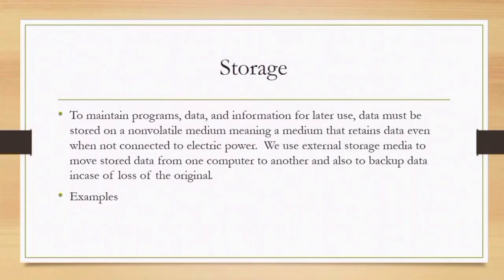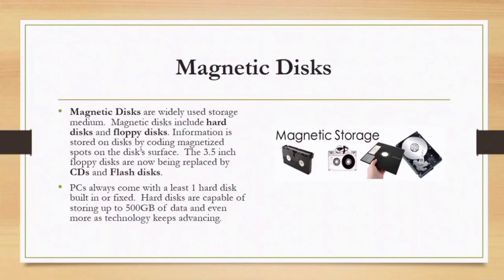To maintain programs and data for future use, data must be stored in a non-volatile medium — a medium that retains data even when not connected to active power. We use external storage media to move stored data from one computer to another, for portability, and to back up data in case of loss of the originals. An example of external storage is the magnetic disk — an already widely used storage medium that includes the hard disk and floppy disk. Information is stored on disk by coding magnetized spots on the disk surface.